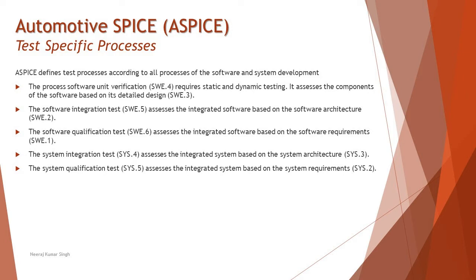For example, process SWE.4 — Software Unit Verification — requires static and dynamic testing and assesses software components based on the detailed design discussed in SWE.3. The Software Integration Test SWE.5 assesses the integrated software based on software architecture SWE.2. The Software Qualification Test SWE.6 assesses the integrated software based on software requirements SWE.1. The System Integration Test SYS.4 assesses the integrated system based on system architecture SYS.3. The System Qualification Test SYS.5 assesses the integrated system based on system requirements SYS.1.